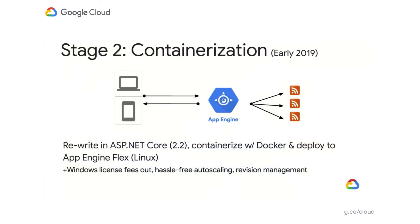With this setup, the Windows license fees were out — our application was running on Linux and it was cheaper to run. We got hassle-free auto-scaling, because in App Engine you get auto-scaling without having to do anything special. And we got the nice features of App Engine, such as revision management and traffic splitting.